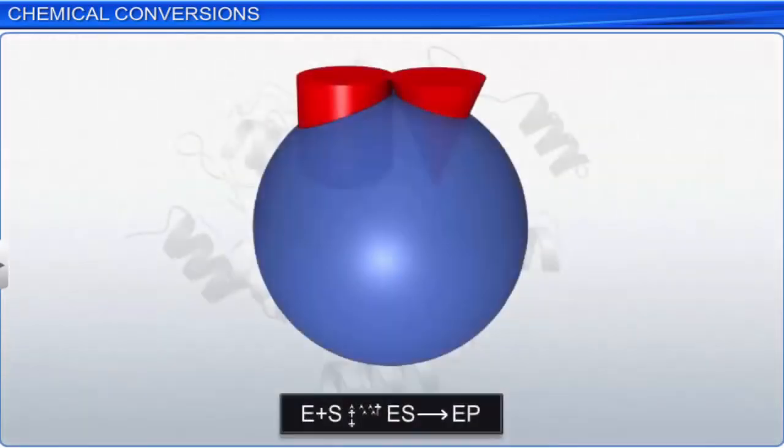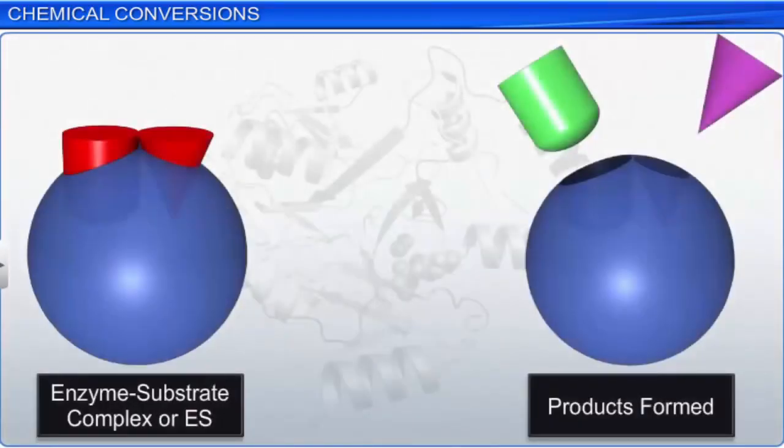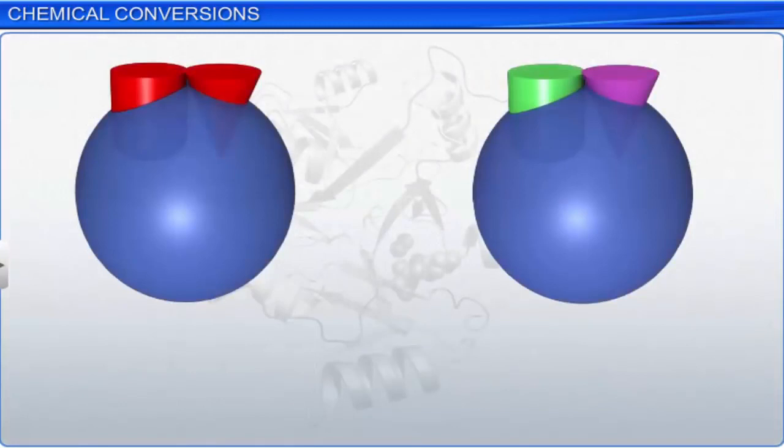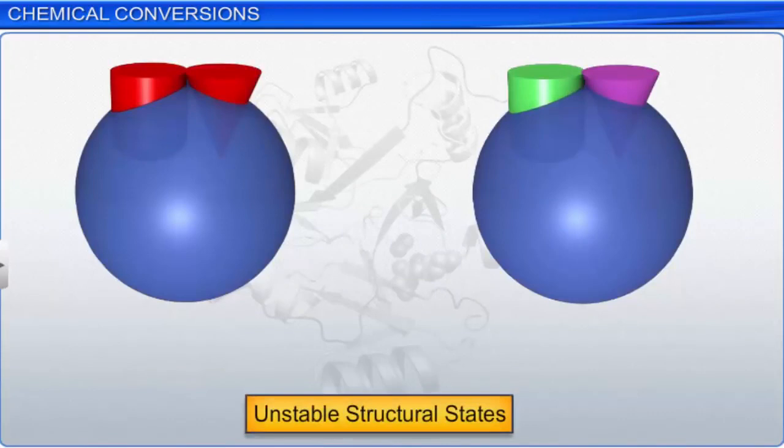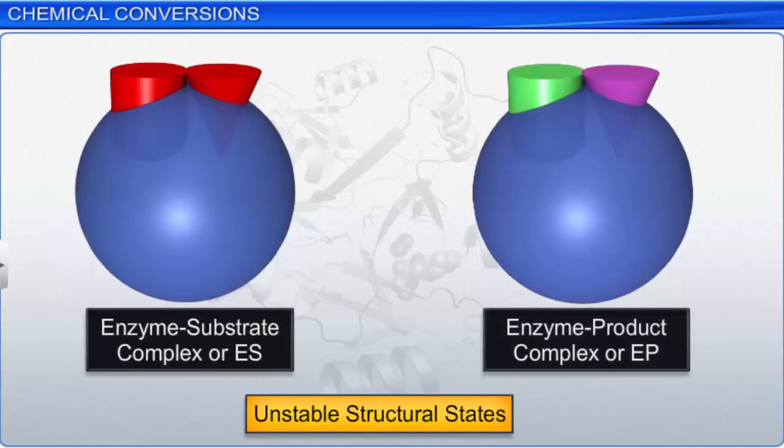These temporarily formed complexes are also known as transition state structures. In the third step, the active site of the enzyme breaks or forms chemical bonds and a new enzyme product complex or EP complex is formed. This EP complex is also unstable. Finally, in the fourth step, the structure of the substrate is transformed into the structure of the products. During the enzyme action, there can be many temporary unstable structural states between the stable substrate and the product. For example, ES and EP complexes. These states are also known as altered structural states.